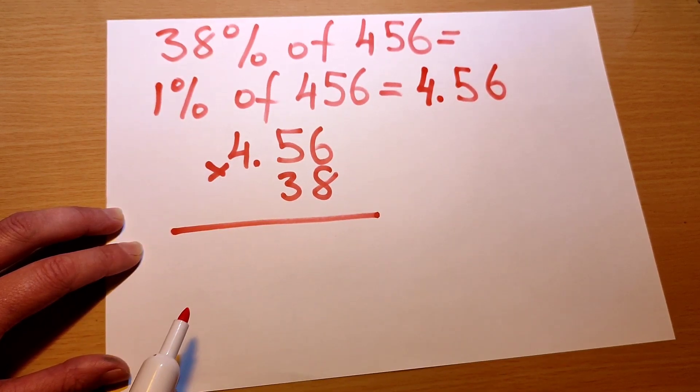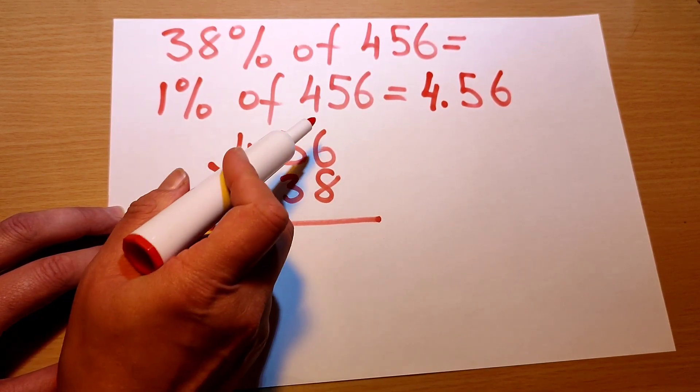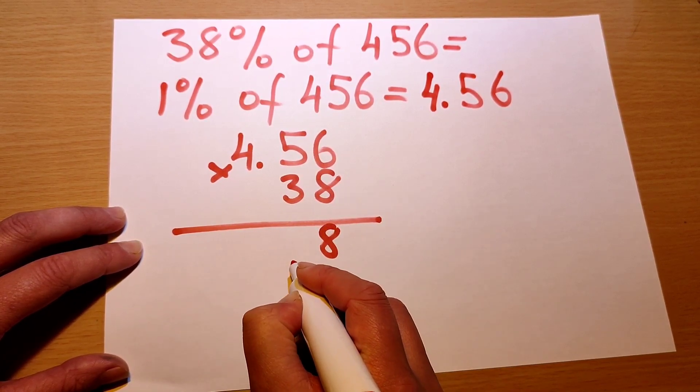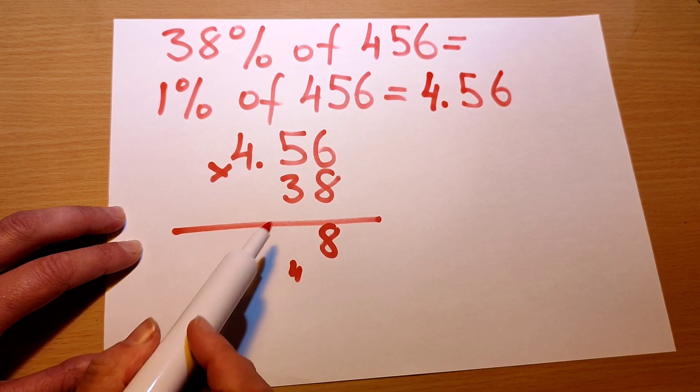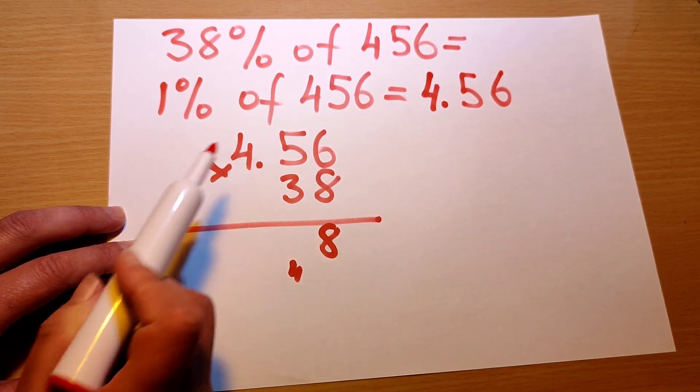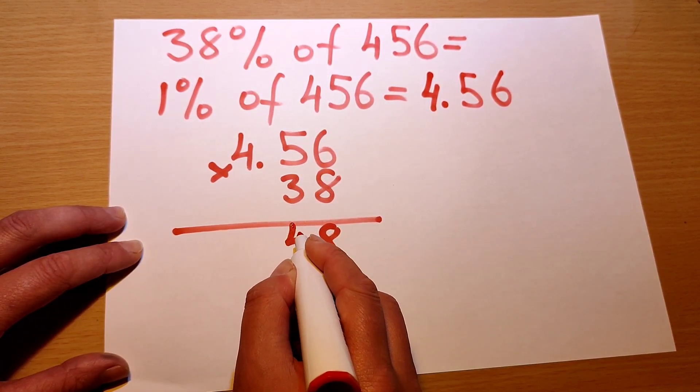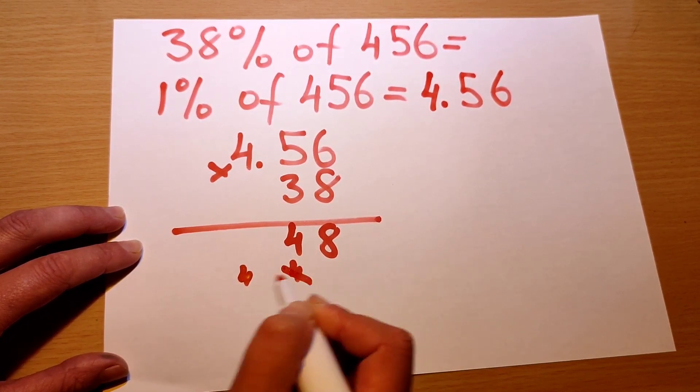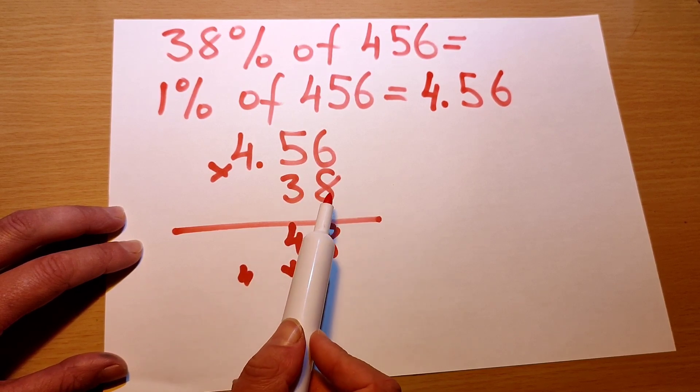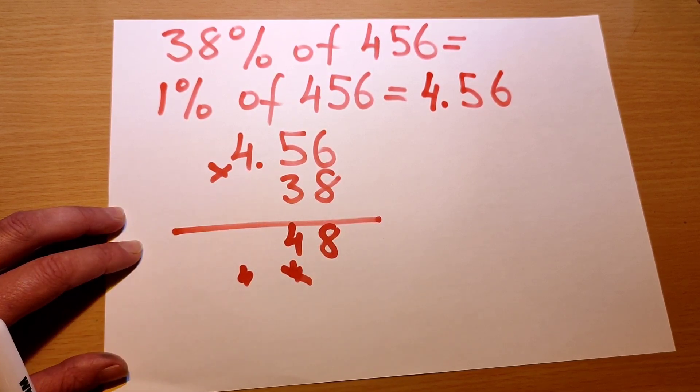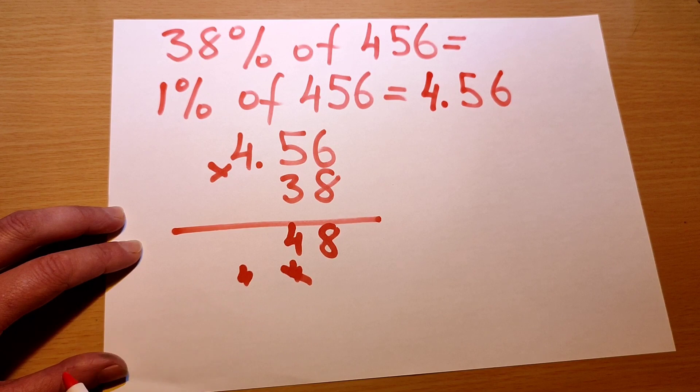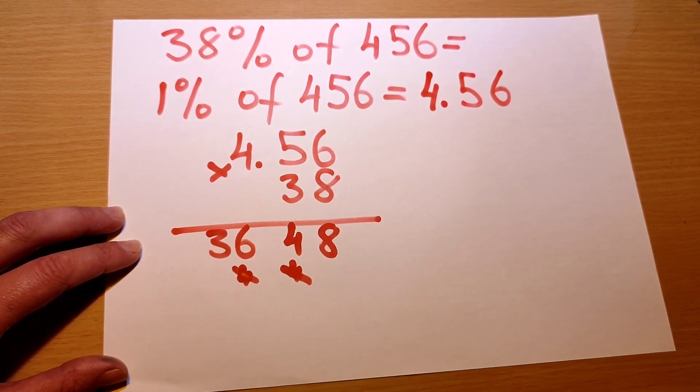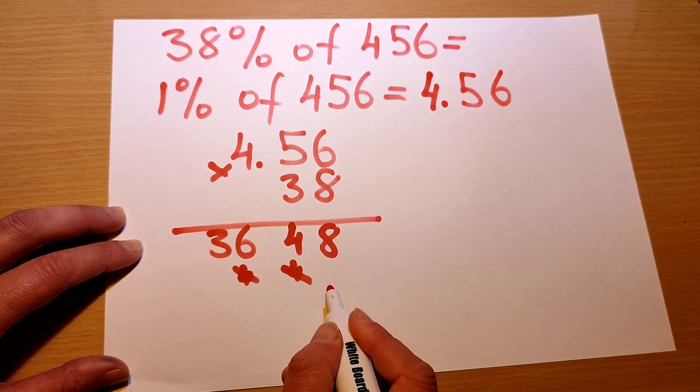We're just doing a simple column multiplication. 6 times 8 is 48, we write the 8, we carry the 4 to the next column. 8 times 5 is 40, and we add the 4 on—44, carry another 4 to the next column, cross this one out so we don't get confused. 8 times 4 is 32, and we carry the 4—36, cross this 4 out. We start the second row with a placeholder 0.